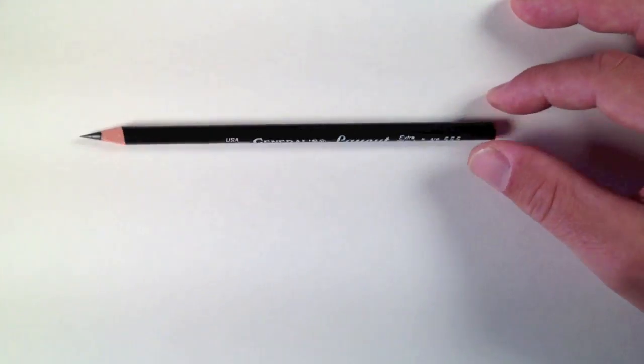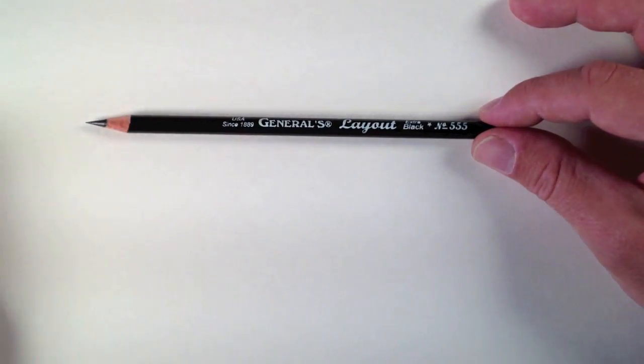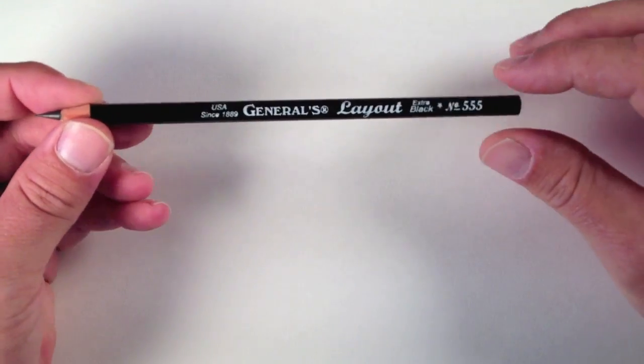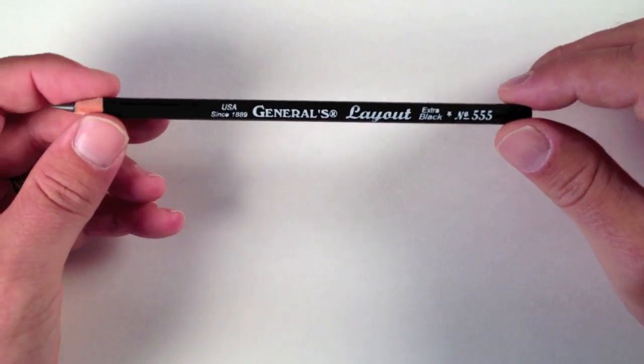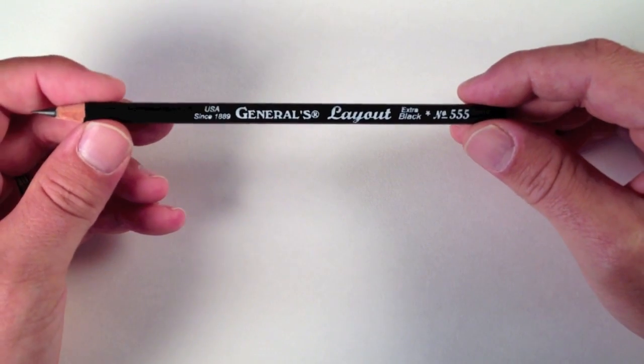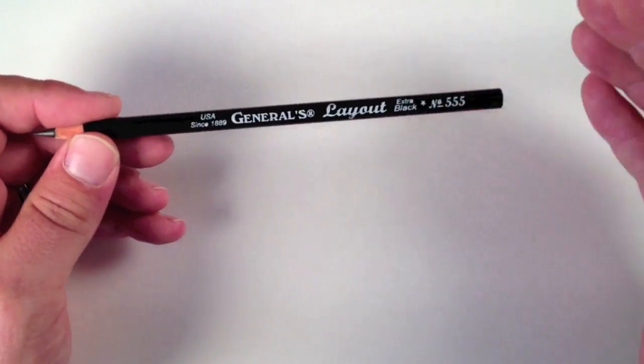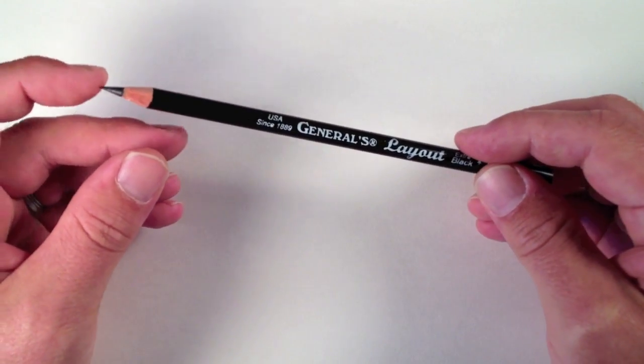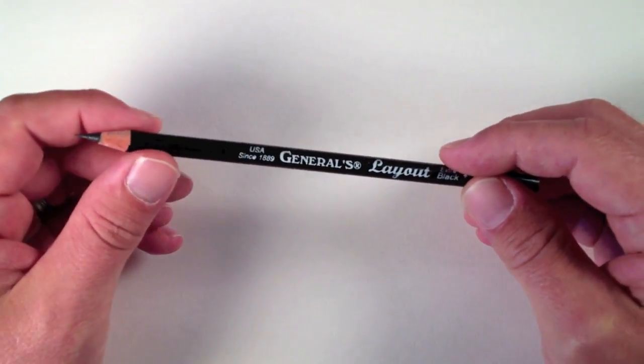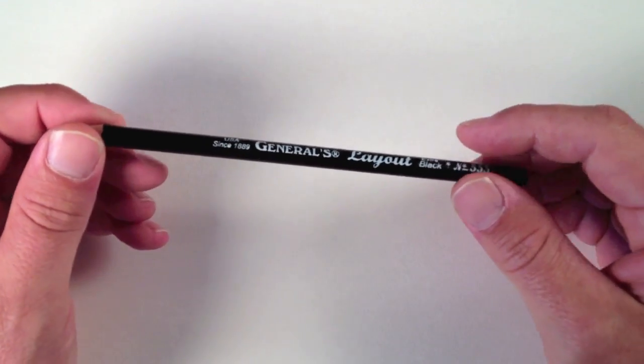If you know anything about artist pencils, it's about equivalent to a 3B. But what makes this pencil so great I think is its versatility. One thing that's really great about it is that the graphite inside of it, although it's soft enough to produce dark marks, it's also hard enough to keep the tip of the pencil relatively sharp while you're drawing.